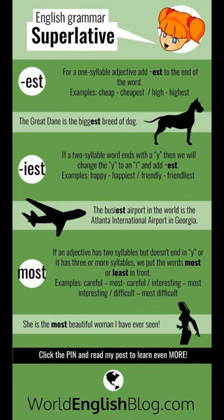An overview of the superlative in English grammar. Superlatives are the highest degree of comparison. This means superlatives are used when we talk about something that is at the top level or the bottom level of equality. Let's take a look at how the superlative works in the English language.